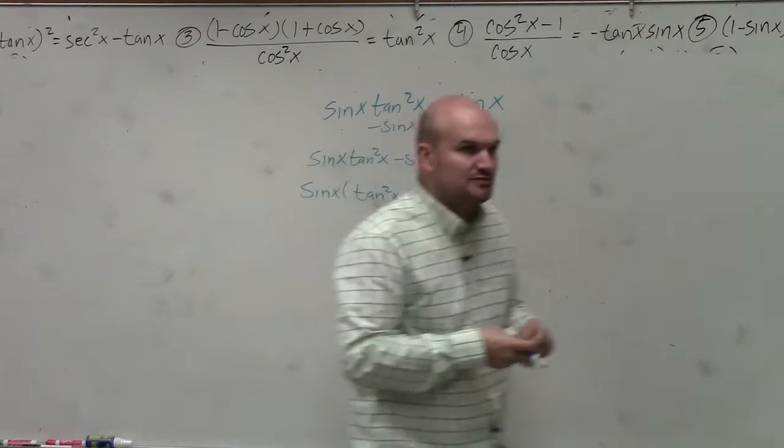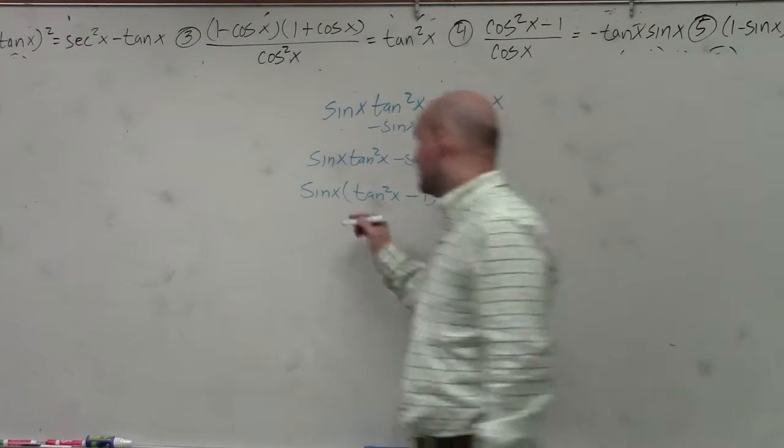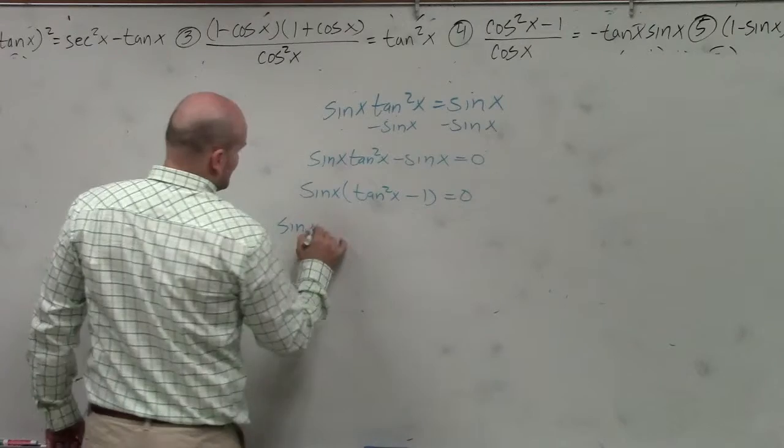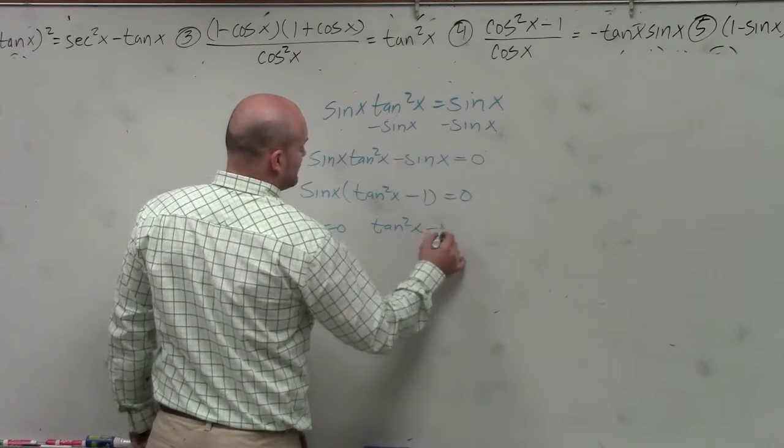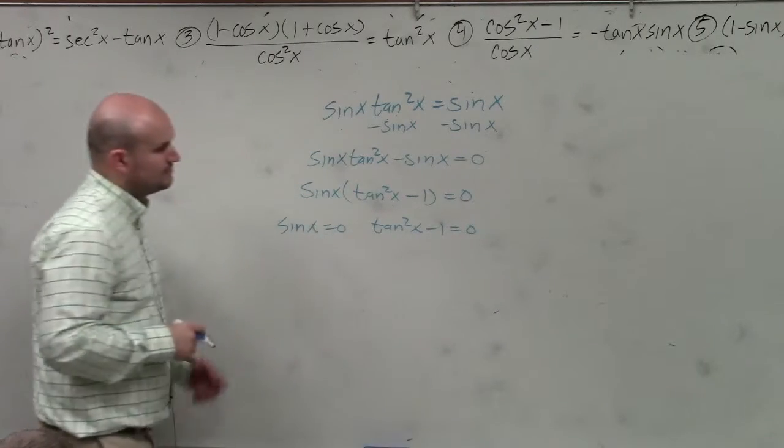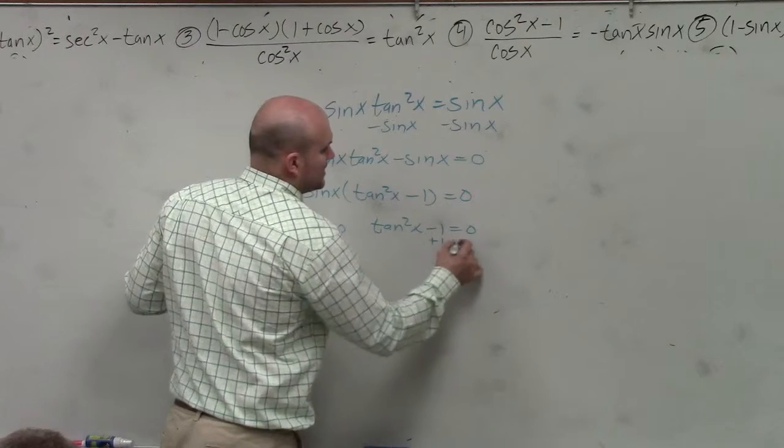Now I have the product of two expressions equal to 0. So now I can apply the zero product property. So I have sine of x equals 0, and tangent squared of x minus 1 equals 0. Well, this is already set equal to 0, so that's good. Here I'll just set equal to 1.